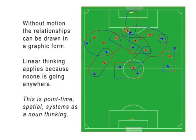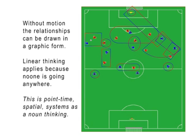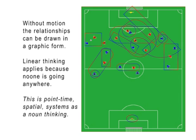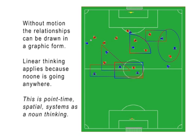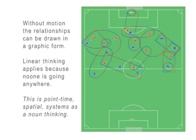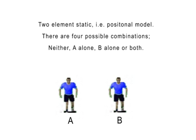In part two, we looked at soccer systems from the perspective of a static point in time. Even without motion, the potential number of free agents, subsystems, and systems was staggering. But using the smallest system of two players, compare the number of possible combinations in this static positional model to a dynamic interval model.